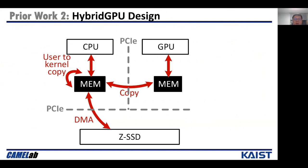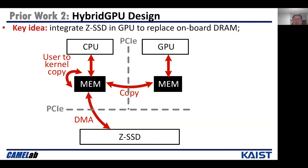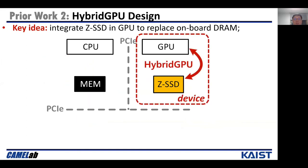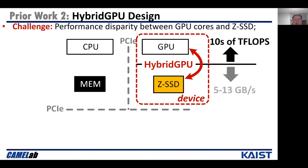To eliminate the data movement overheads, prior work proposed a hybrid GPU. It replaces the GPU-side memory with ZSSD, and the GPU can directly access the SSD through a customized interface. With the hybrid GPU design, the GPU can leverage high storage capacity to accommodate all datasets, reduce power consumed by GPU DRAM, and eliminate redundant data copies. However, there are huge performance disparities between the GPU and ZSSD. GPU cores can deliver tens of teraflops throughput, while ZSSD can only serve a few gigabytes per second. The limited bandwidth of ZSSD becomes a performance bottleneck in the hybrid GPU system.